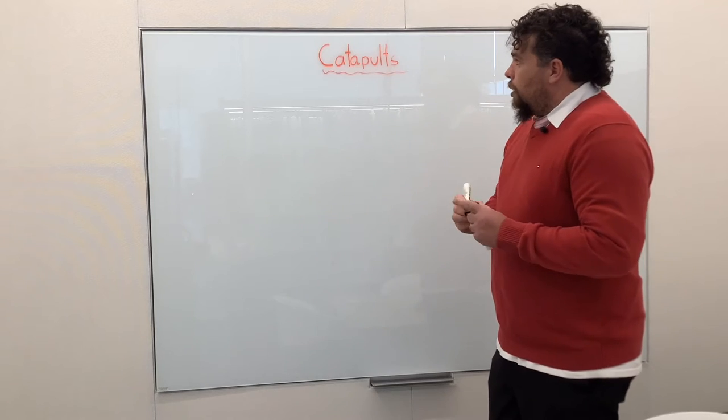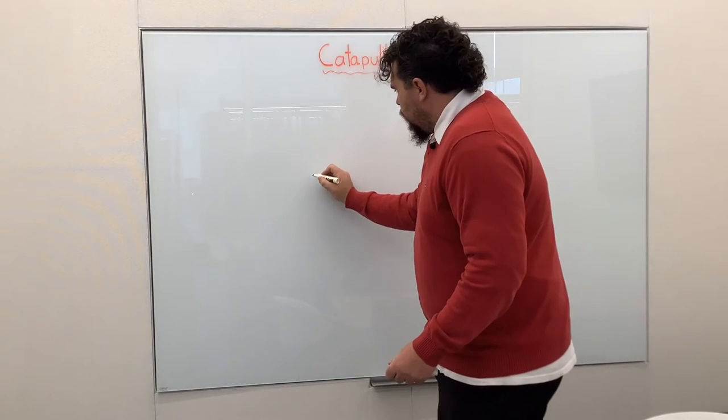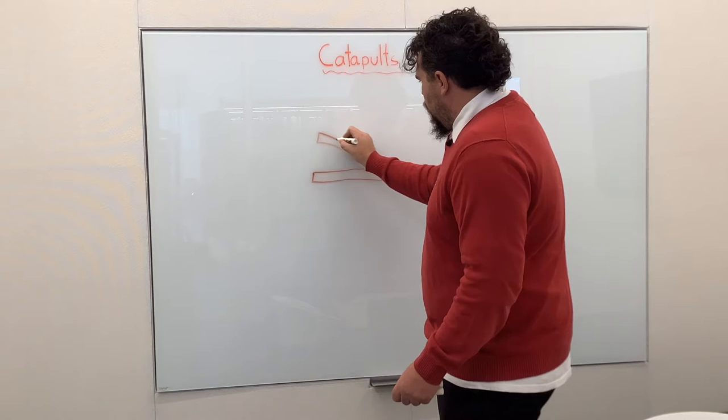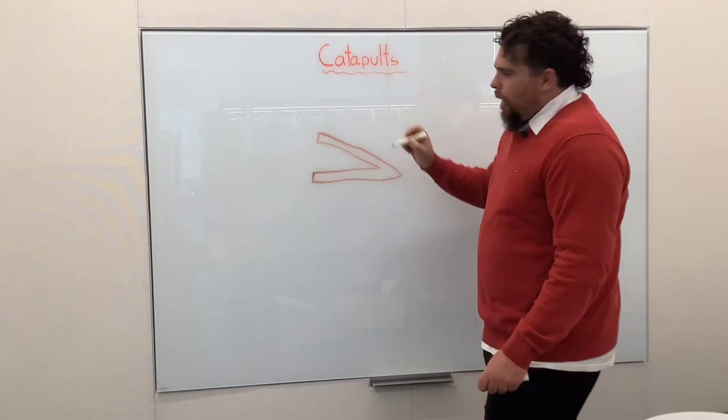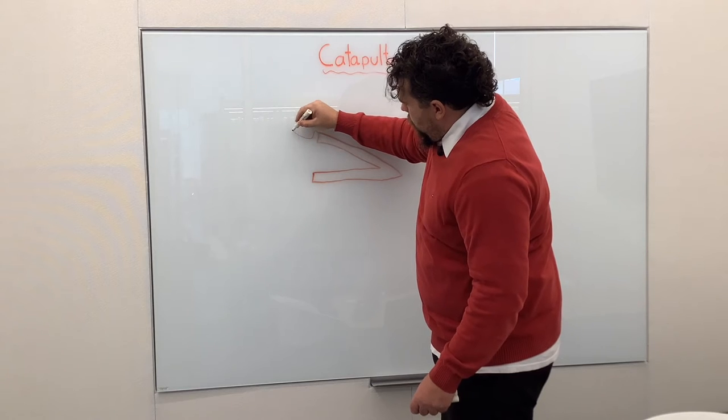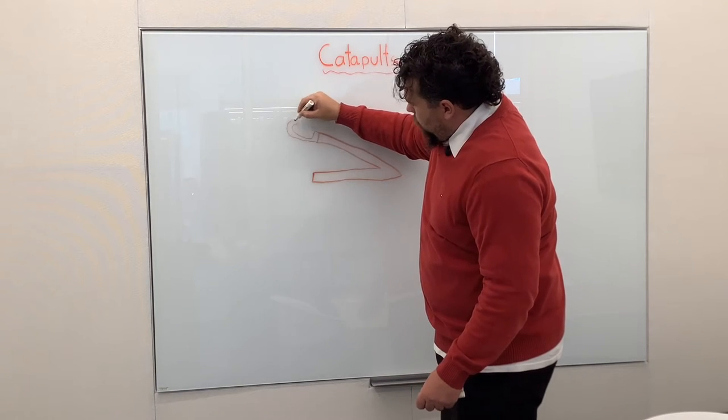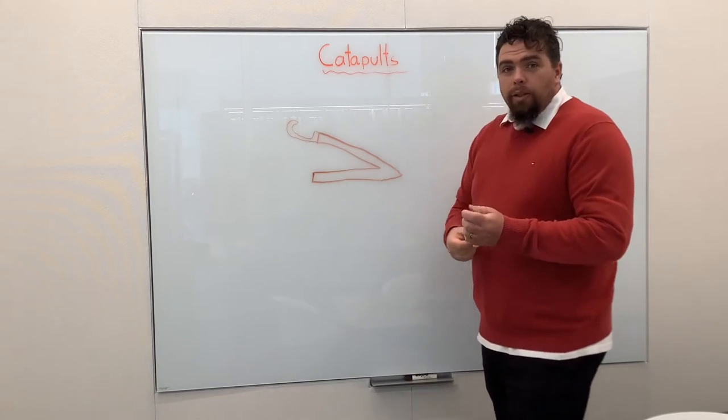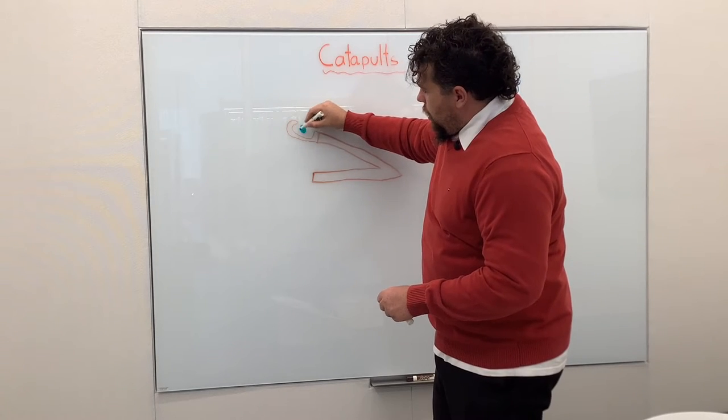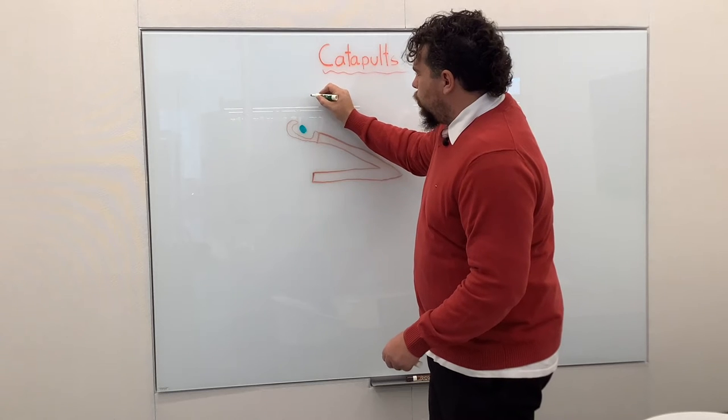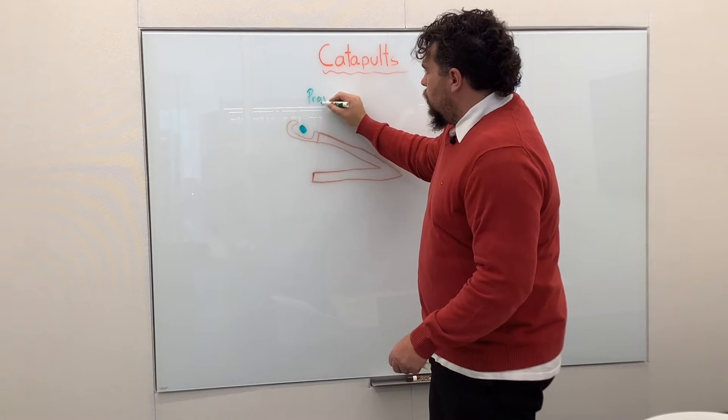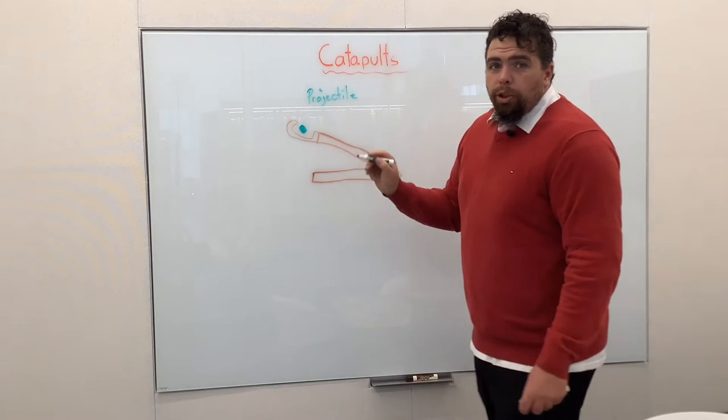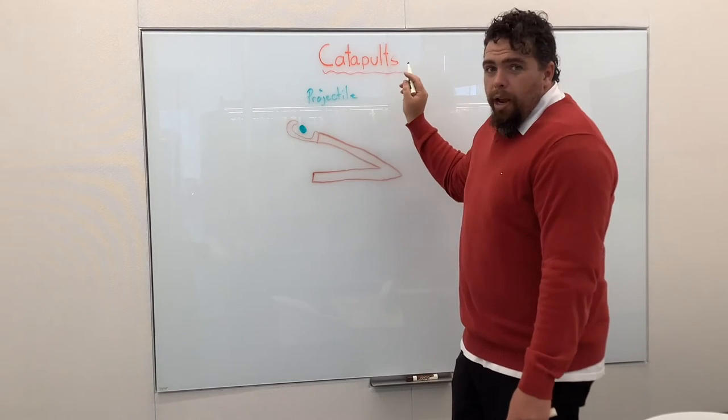Talking about a catapult, the first thing we need is a catapult. So let's get our catapult right here. There's our catapult. All right, so when we have a catapult, we also have the item that we're going to fly through the air, and that's going to be called our projectile. So a projectile is what we're going to be making fly through the air.